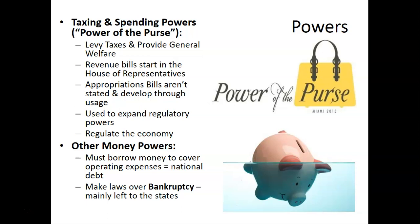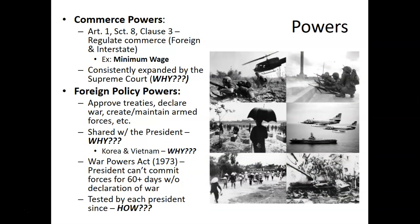Other money powers include the ability to borrow money to cover operating expenses, which is one of the main sources of our national debt. This can come through any number of avenues. Congress can also make laws over bankruptcy, though bankruptcy laws are generally more left up to the states.